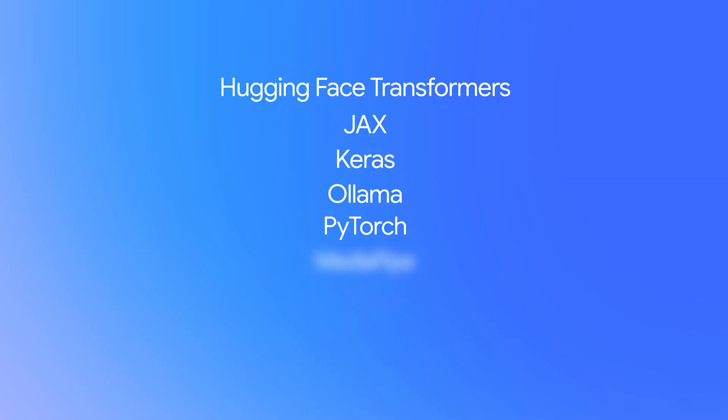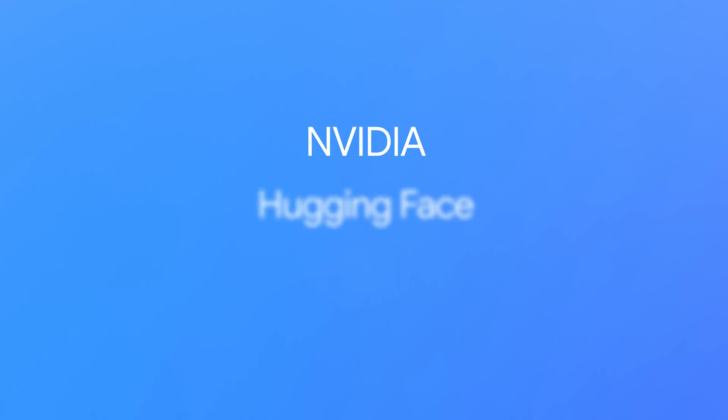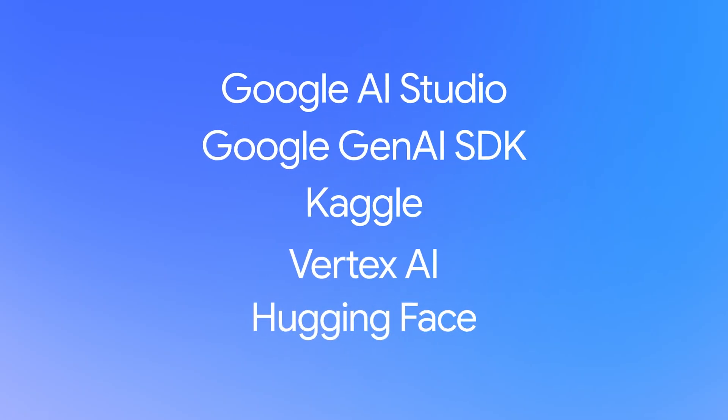Gemma 3 is supported by popular frameworks like Transformers, JAX, Keras, Ollama and many others. We've also partnered with industry leaders like NVIDIA, Hugging Face and AMD to ensure speed, efficiency and seamless integration. You can try Gemma 3 today through Google AI Studio or the Google Gen AI SDK, or use it directly from platforms like Kaggle, Vertex AI or Hugging Face.